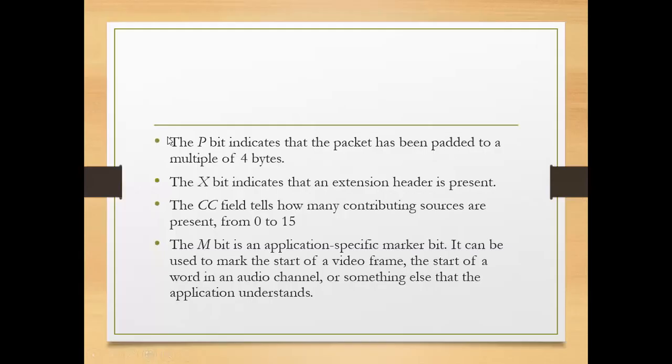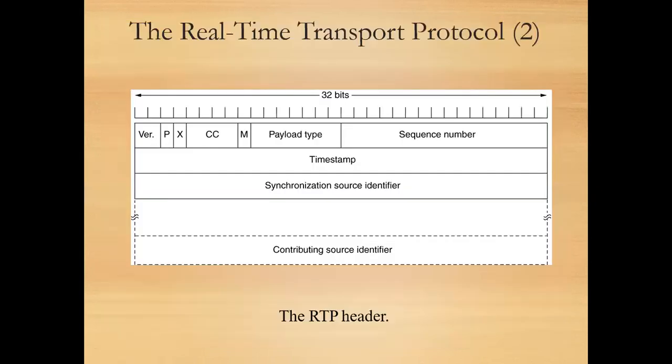The next field is X. The X bit indicates that an extension header is present. If the X bit is set to 1, then the extension header is present. If X bit is 0, then the extension header is absent. So X is a single bit that indicates whether an extension header is present or not.